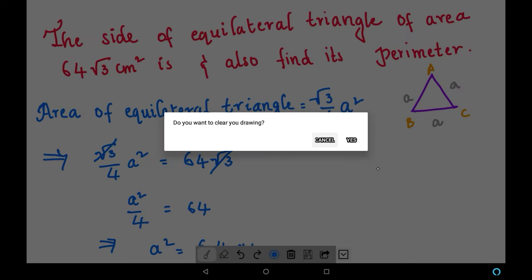Let us write it on the next page. a² = 64 × 4. Then, a will be the square root of 64 × 4.